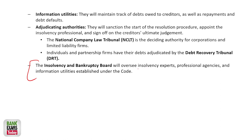IBBI gives certificates and licenses to insolvency experts and professionals. Information utilities maintain track of debt owed to creditors, repayment schedules, and debt defaults — as the name suggests, they provide information. The adjudicating authorities are NCLT and DRTs. NCLT is the deciding authority for corporations and limited liability firms, while DRT — Debt Recovery Tribunal — is for individuals and partnership firms. Please remember: NCLT for corporates and limited liability firms, and DRT for individuals and partnership firms.